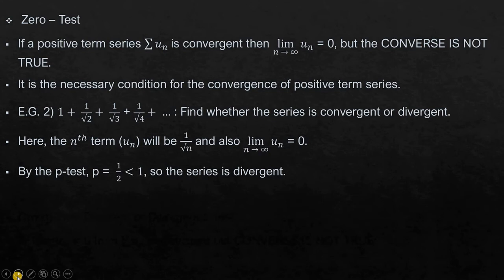So you can see here that even if the limit n tending to infinity u_n is zero, still the series is divergent. Hence, it is not the sufficient condition but surely it is the necessary condition for a positive term series to be convergent.